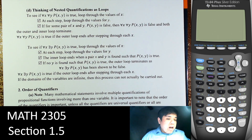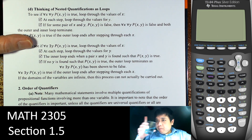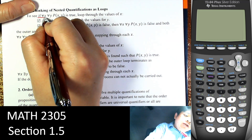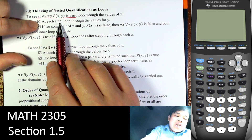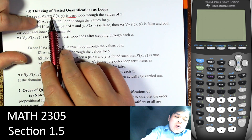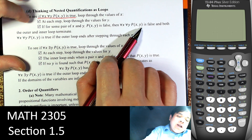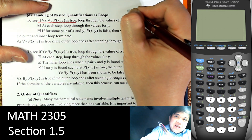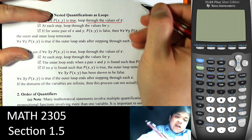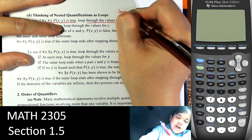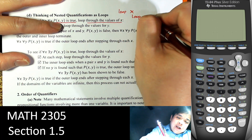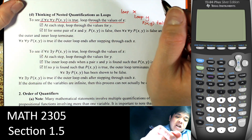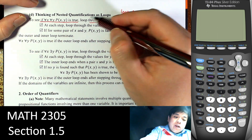Thinking of nested quantifiers — think of quantification as loops. Let's say we have for every x, for every y, P(x,y) is true. If this is true, we go through every value of x, and at every step, look through all the values of y, because it says all x and all y. If there is some pair x, y where P(x,y) is false, then it's false, and both the inner and outer loops terminate. So we loop through every x, and inside there's a loop for y. If any P(x,y) is false, we stop and say false. If the loop goes through every possible value, then it's true.